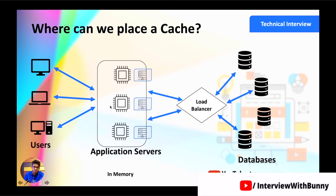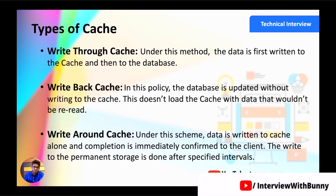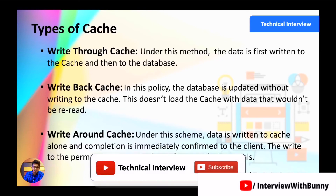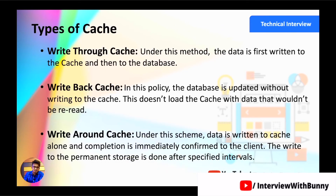To solve the consistency problem, we can use different types of cache. Write-through cache: data is first written to the cache memory and then to the database. Write-back cache: data is written directly to the database and not stored in the local cache, so there is no mismatch between servers. Write-around cache: data is written only to the cache, the completion is immediately confirmed to the client, and the cached data is written to the permanent database after a specific interval of time.